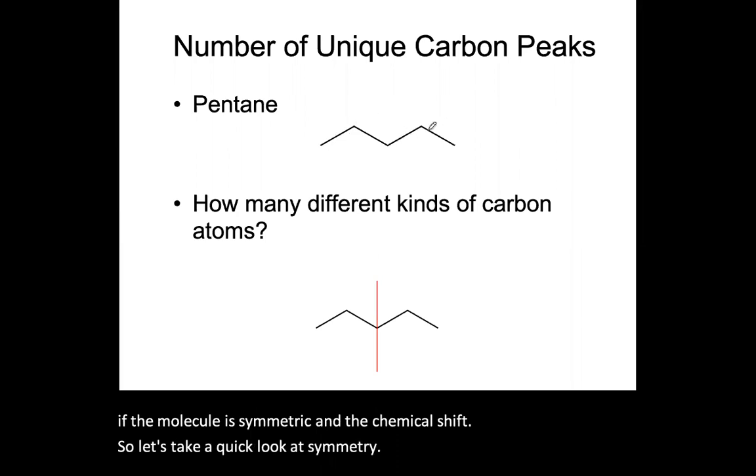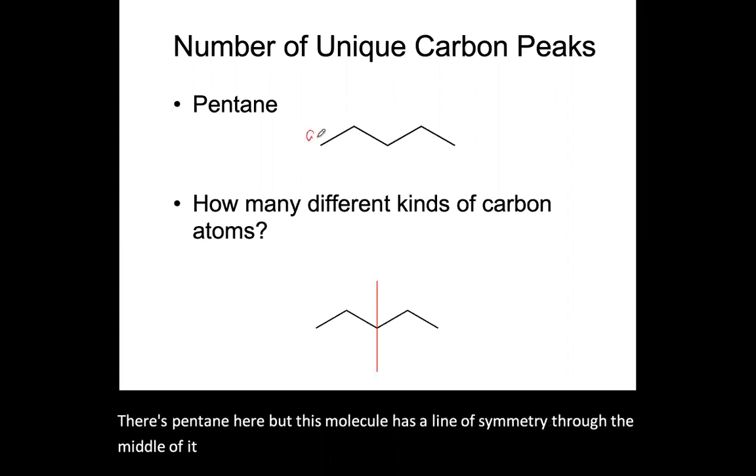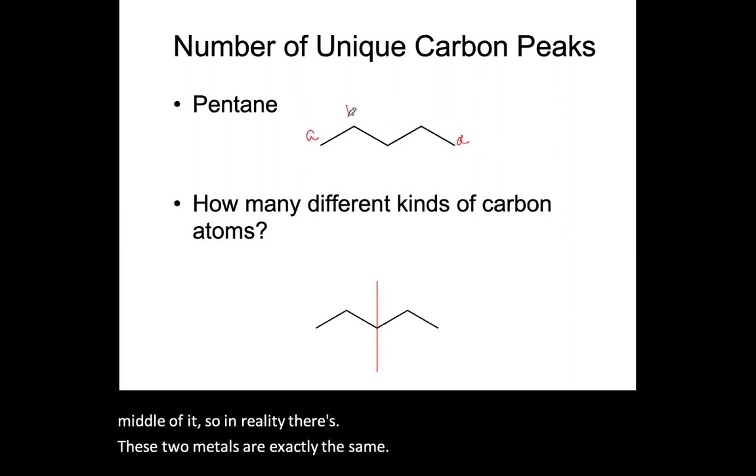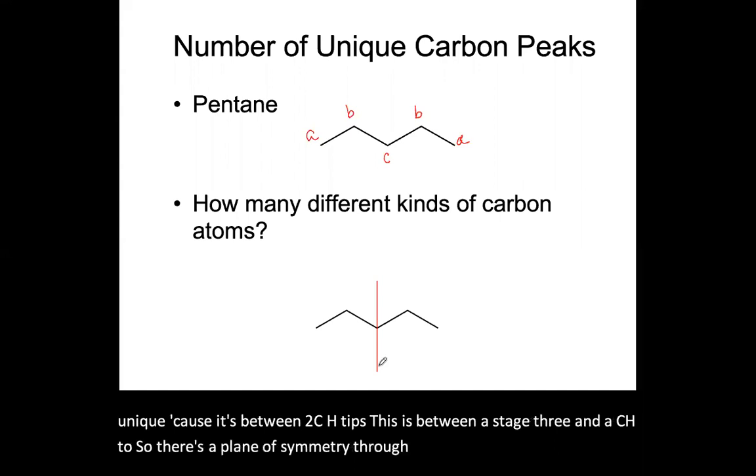There's pentane here, but this molecule has a line of symmetry through the middle of it. So in reality, these two methyls are exactly the same, and these two methylenes, the CH2s, are the same. And then this one is unique because it's between two CH2s. This is between a CH3 and a CH2. So there's a plane of symmetry through the molecule and I get three peaks in my NMR then.